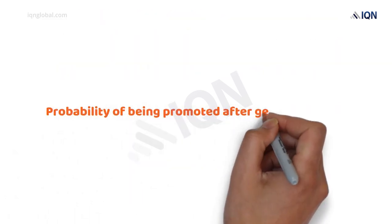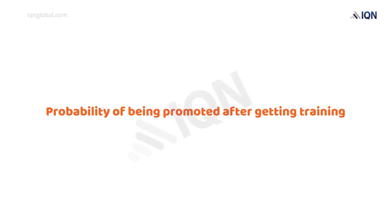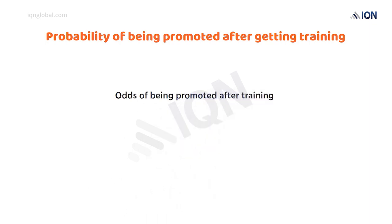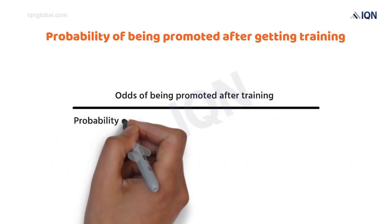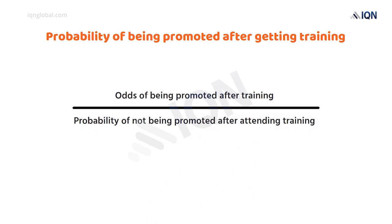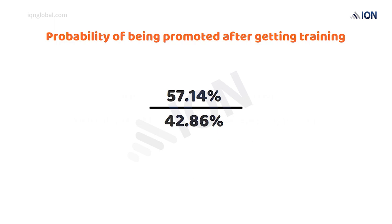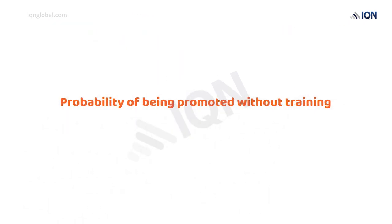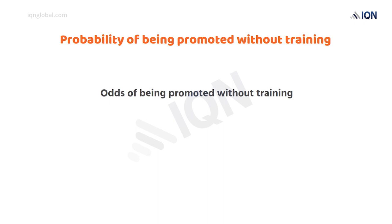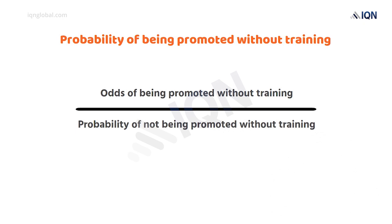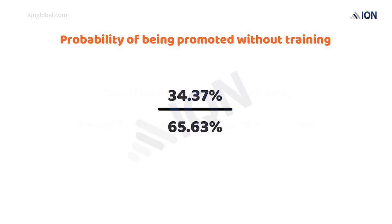Now we will calculate the probability of being promoted after getting training. This equals the odds of being promoted after training divided by the probability of not being promoted after training — that is, 57.14% divided by 42.86%, which gives a result of 1.33. We then calculate the odds of being promoted without training: 34.37% divided by 65.63%, which gives a result of 0.5237.